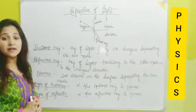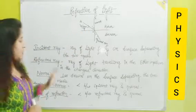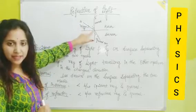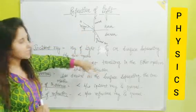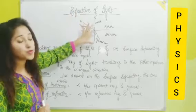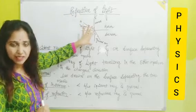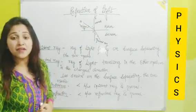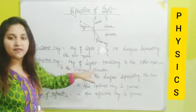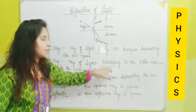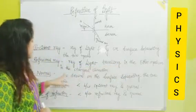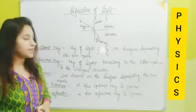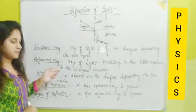Coming up next is Refracted Ray. What is Refracted Ray? When the ray comes to the surface and bends, it means it went from one medium to the other medium — that is the Refracted Ray. The ray of light traveling in the other medium in the changed direction is known as Refracted Ray.